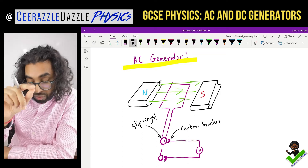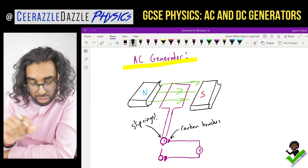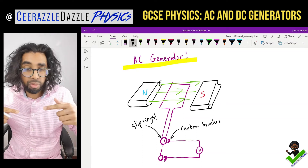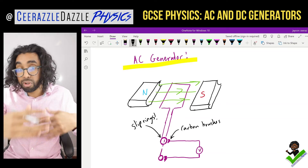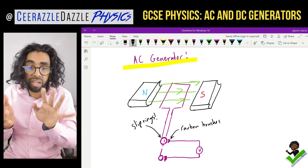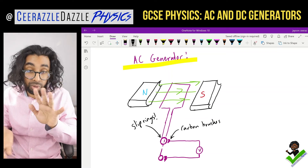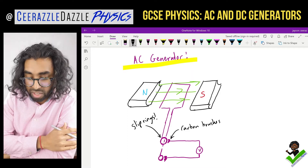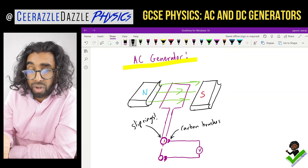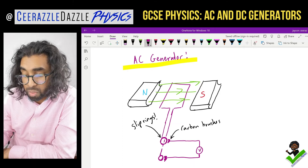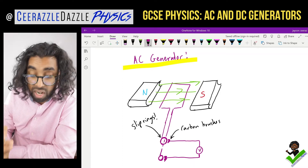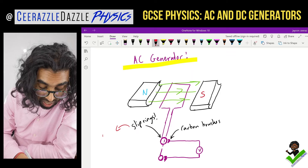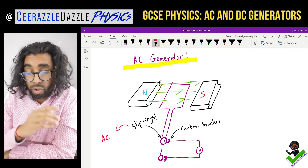Each slip ring is continuous and attached to the carbon brushes, which connect to a voltmeter. One of the wires can pass through a slip ring without affecting it as it rotates, so both can move together without influencing each other — allowing full rotation. There's no swapping of split rings here, just slip rings cycling around continuously.